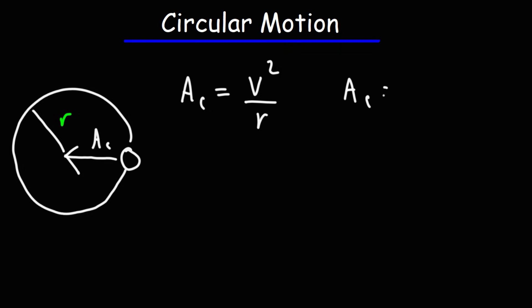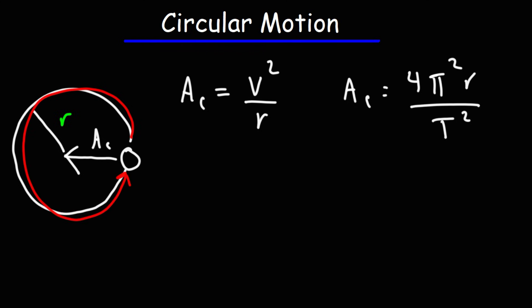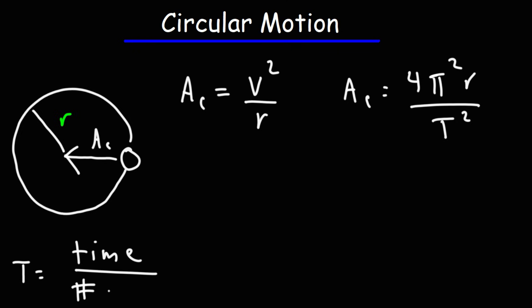You can also calculate the centripetal acceleration using this formula: 4 pi squared times the radius of the circle divided by the square of the period. The period is the time it takes for this object to complete one cycle. Another way to calculate the period is it's equal to the time divided by the number of cycles.